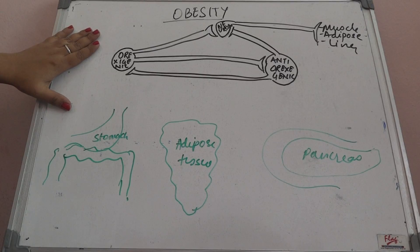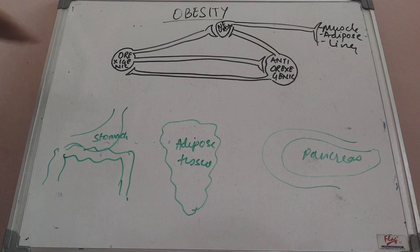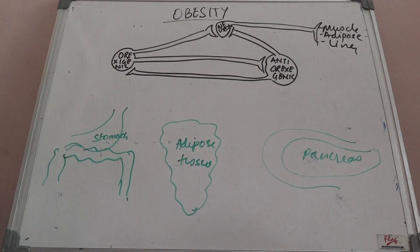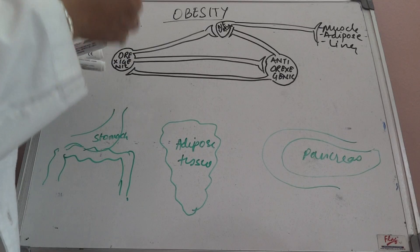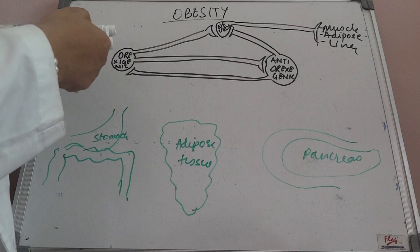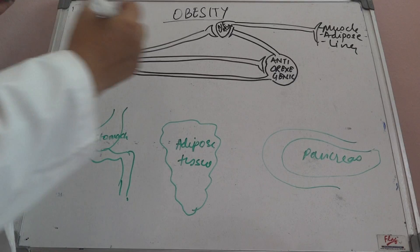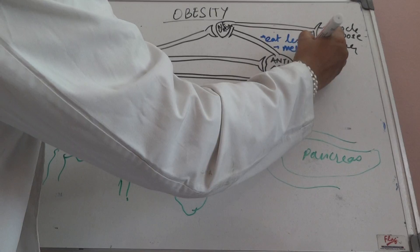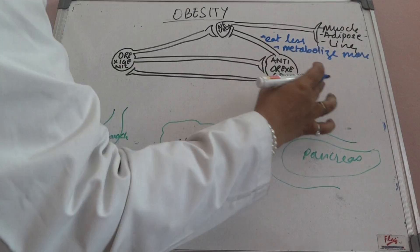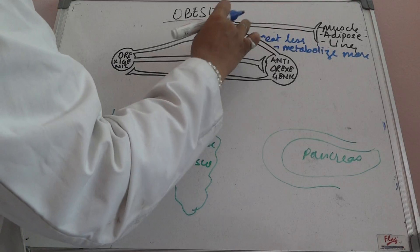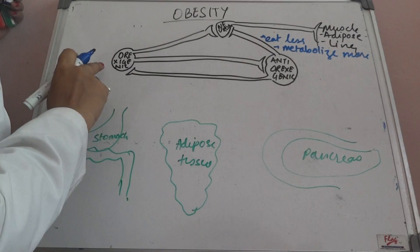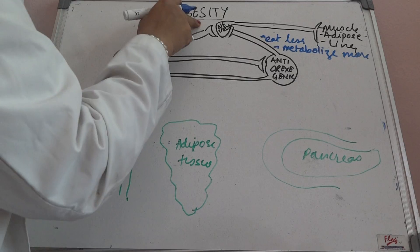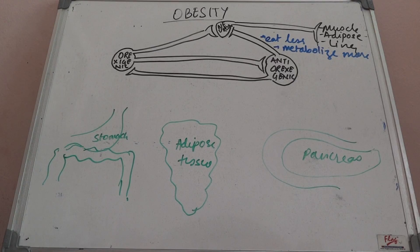Orexigenic means you want food — it helps you gain fat, eat more, and metabolize less. Anti-orexigenic is the opposite: eat less and metabolize more. Anti-orexigenic tells the neuron to eat less and metabolize more, and the neuron passes this message to muscle, adipose tissue, and liver. Orexigenic tells the neuron to eat more and metabolize less, and the neuron passes that message to the same organs.